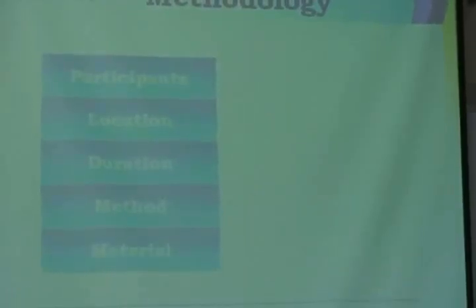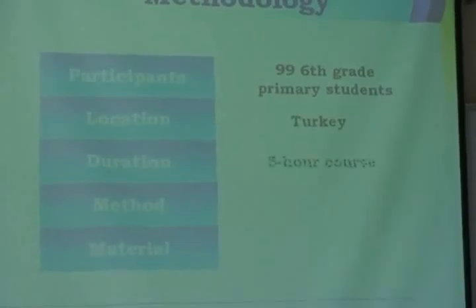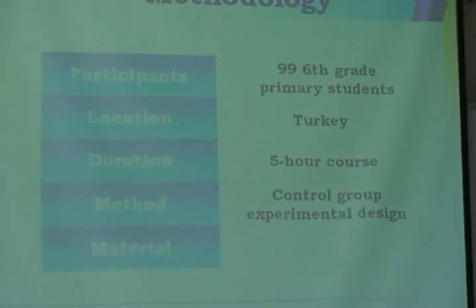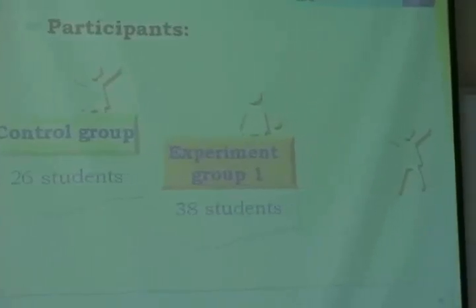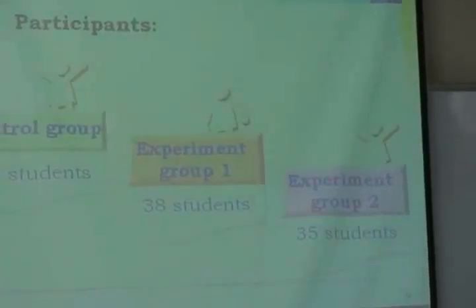Methodology. The participants were 99 sixth grade primary students. The location involved 30 classes. Duration is a 5-hour course. The method used in this study is a control group experimental design. The materials are two story texts. The participants were divided into three groups: 26 students in the control group, 38 students in experiment group 1, and 35 students in experiment group 2.